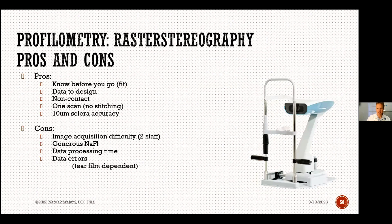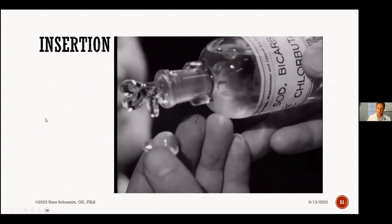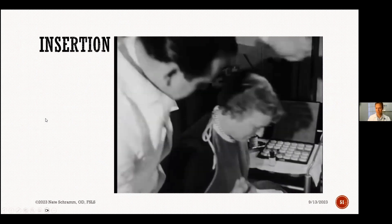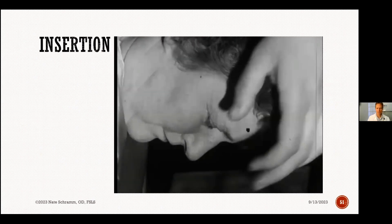A third option is raster stereography, which also has 10-micron accuracy, and typically requires two staff. This historical 1951 video shows the classic scleral lens insertion technique: pull down the upper lid, fill the lens with saline, and pop it into the eye — essentially the same as today. I need to get a barber's apron for my patients.